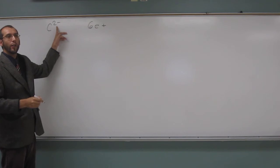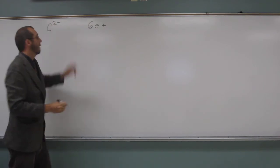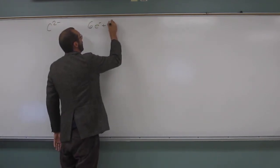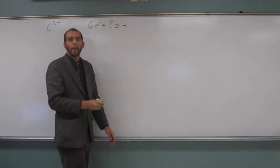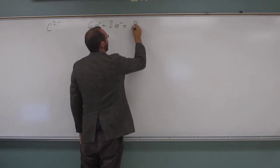And then we're going to add how many electrons to it? Two. Two electrons. So we've got six electrons plus two electrons, so that's a total of how many electrons? Eight electrons.